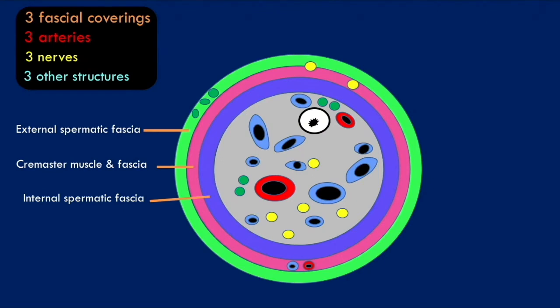In terms of the three arteries, the first is the testicular artery, which is a branch of the abdominal aorta arising just below the renal arteries. The second artery is the artery to the vas deferens, which supplies blood to the vas deferens and is a branch of the inferior vesicle artery, itself a branch of the internal iliac artery.